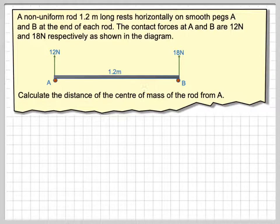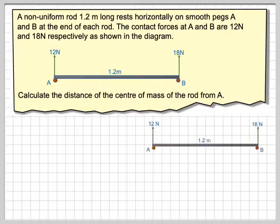So the rod is non-uniform, so a little diagram will help. We can't say the centre of mass will be halfway along the rod.